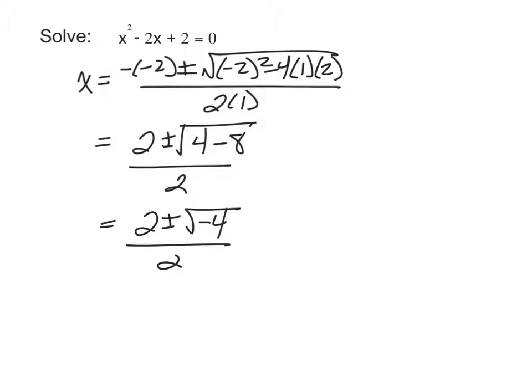In order to take care of the negative part here, what we do is we take the square root of negative 4 and break it into the square root of 4 and the square root of negative 1. So the square root of 4 is 2, and the square root of negative 1 is I.